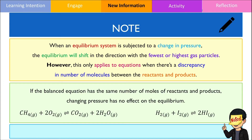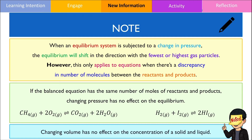As you can see in the two examples below, both the number of reactants and products contain the exact same number of molecules, hence there will be no net reaction. Additionally, it is worth reminding you that changing the volume of a system will have no effect on the concentration of a solid or a liquid.